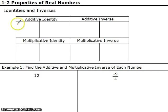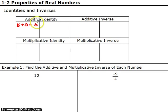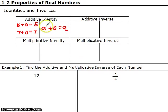This says that there's a number that exists that if I add it to any number, it will equal itself. So 5 plus 0 equals 5. 7 plus 0 equals 7. This will work for any number — A plus 0 equals A. So 0 is the additive identity, the one you add to any number so it equals itself.